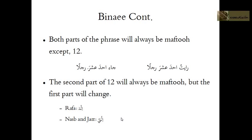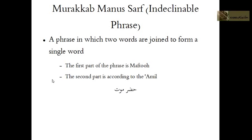For the number 12, the Ashara part will always have a fathah, but the Ithna part changes. In the state of Rafa' it will be Ithna with an alif — Ithna Ashara. In the state of Nasb and Jar it will be Ithnai with a ya' — Ithnai Ashara. That concludes this lesson on the incomplete phrases. The next video will have exercises for this material.